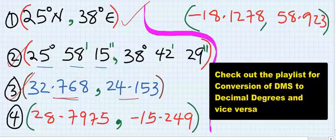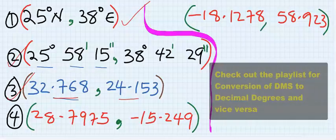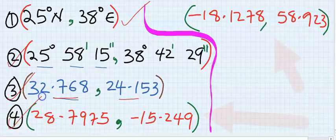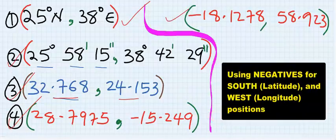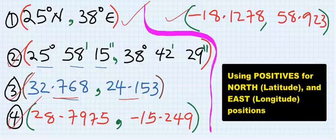Number four method is using negatives to represent different west and south positions, and using positive for east and north representations. But not all countries adopted this method.